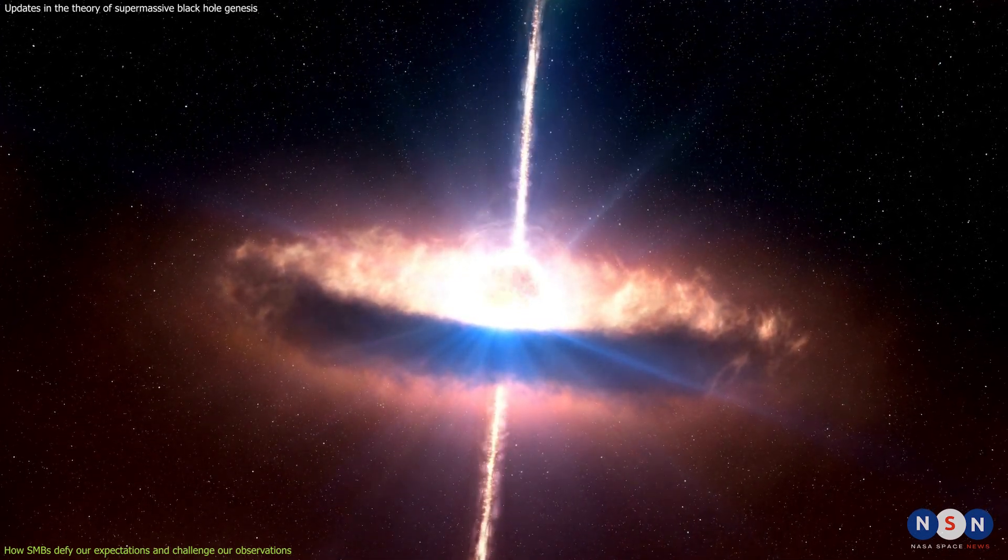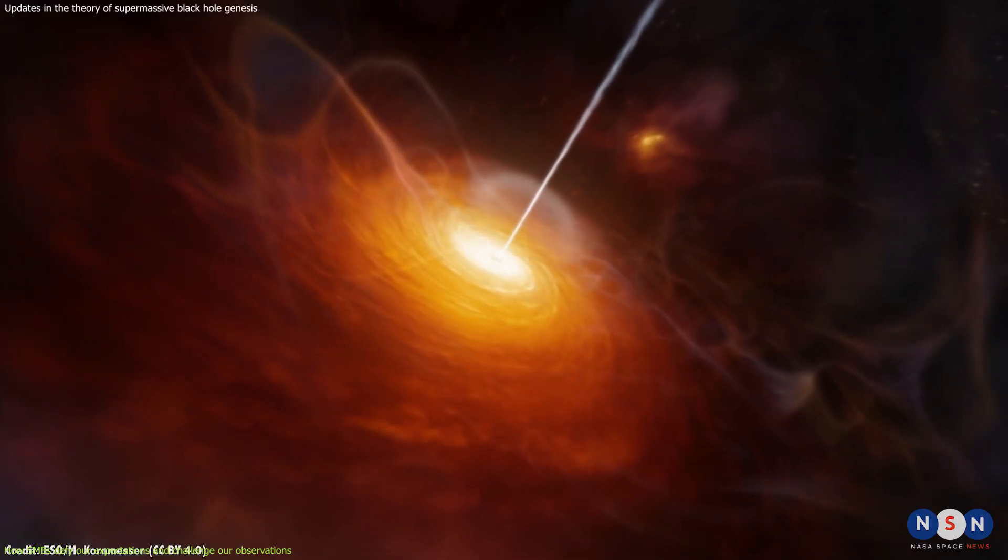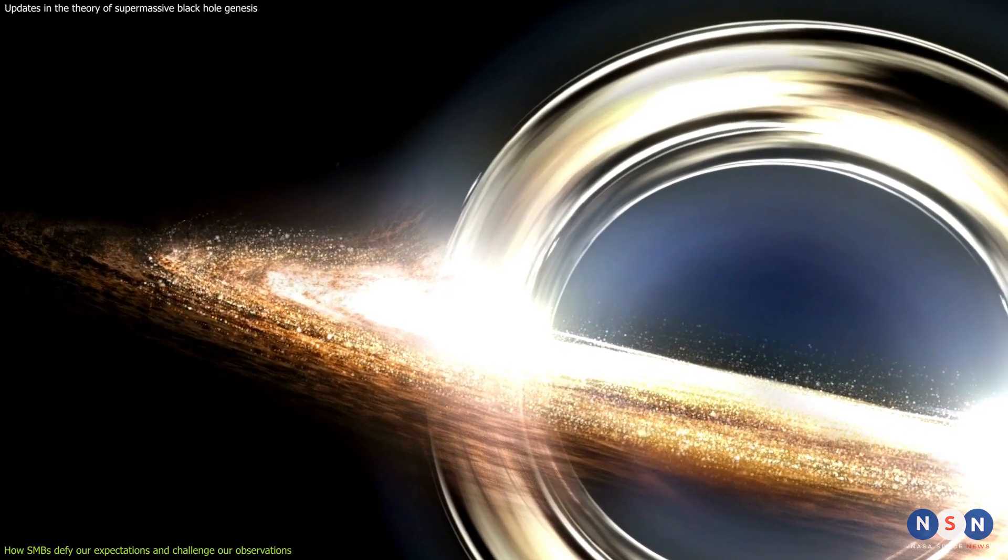These black holes are also extremely bright because they emit huge amounts of radiation as they accrete matter from a disk of gas and dust around them. This radiation can be detected across the electromagnetic spectrum from radio waves to gamma rays, and it can reveal a lot about the properties and behavior of these black holes.